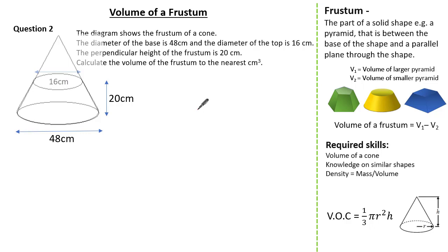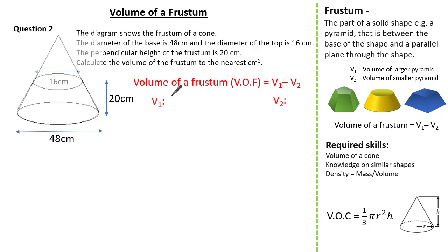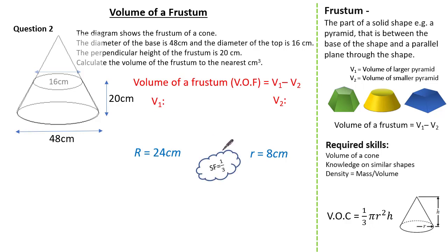Sometimes in an exam it's helpful to draw the cone to help with the visualization. We know to work out the volume of a frustum it's simply the volume of the larger cone subtract the volume of the smaller cone. For our larger cone the radius is 24 cm, and for the smaller cone the radius is 8 cm. Therefore the scale factor is one-third, because one-third of 24 gives us 8. Unfortunately we don't know the height of either cone.